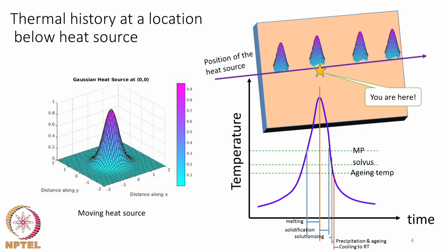The slope of the thermal profile is determined by the heat removal process — faster heat removal gives a higher slope. These slopes translate to the time spent in different temperature regimes. For example, the time spent above the melting point determines how long the location is in the liquid state, affecting mixing. There is also a solvus temperature above which precipitates dissolve — longer time above it means more dissolution. The slope of the thermal profile plays a key role in the material properties.